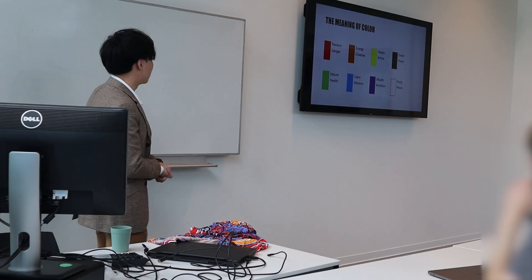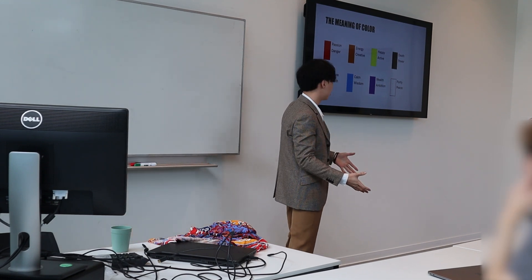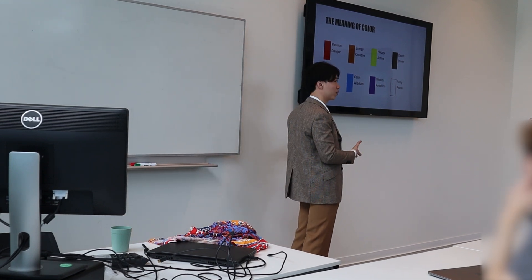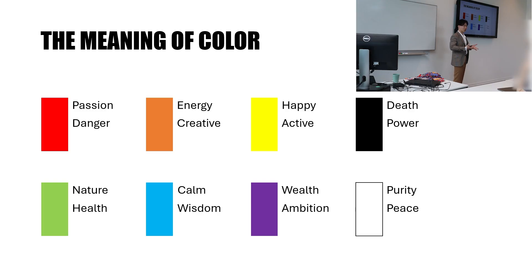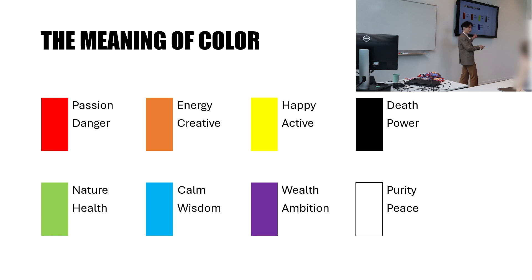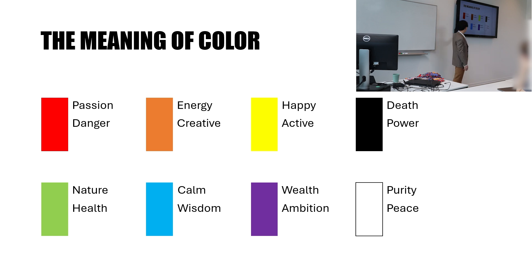Now, the meaning of color. Different colors can convey different emotions to your audiences. Red is passion or danger. Orange suggests energy and creativity. Yellow conveys happiness — as in Inside Out, they use yellow to represent joy. Black represents death and power, something sinister. Green is nature and health. Blue is calm and wisdom. Purple suggests wealth and ambition. White is pure and clean.